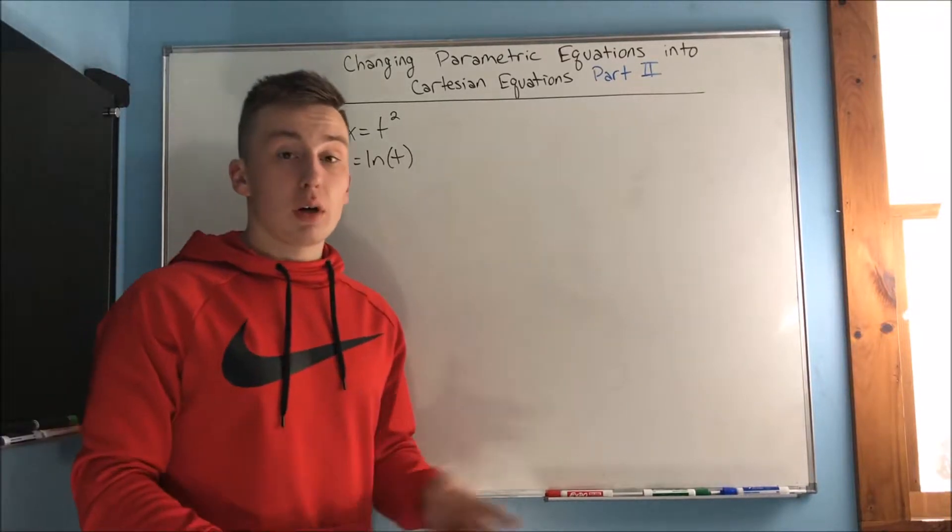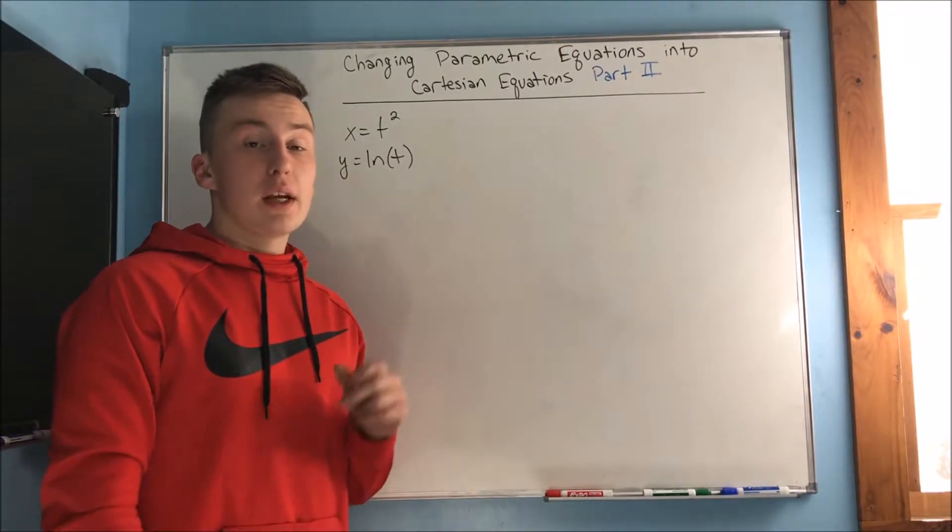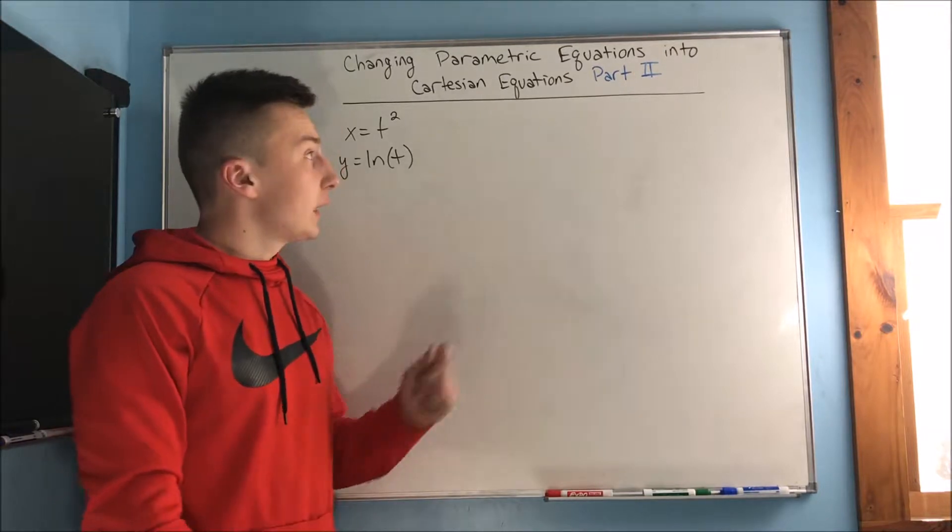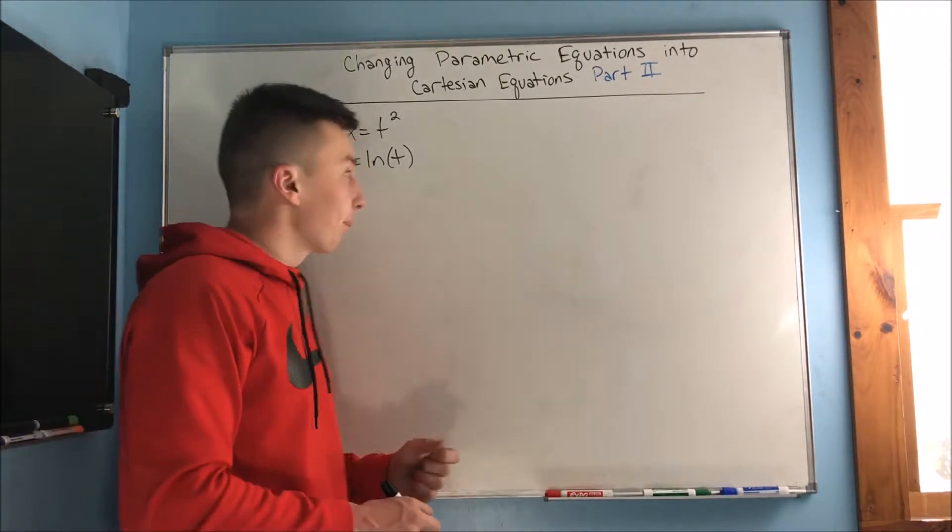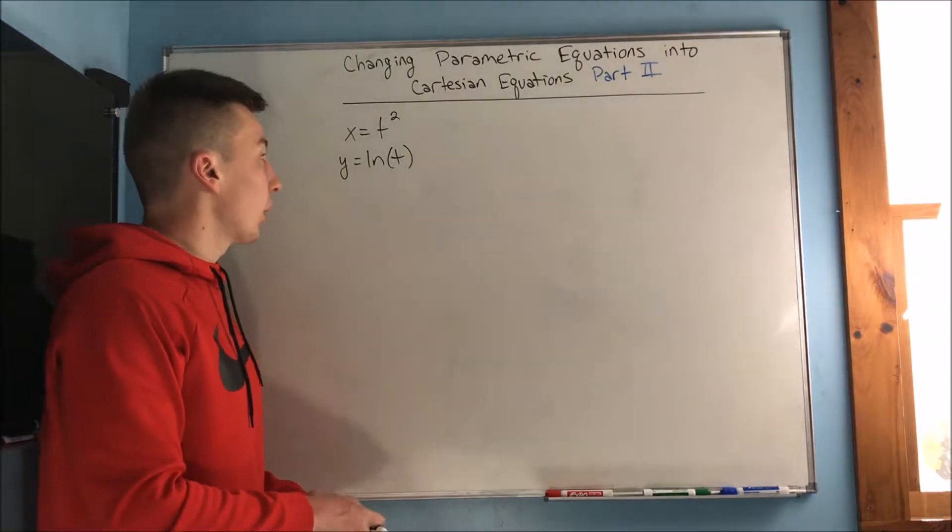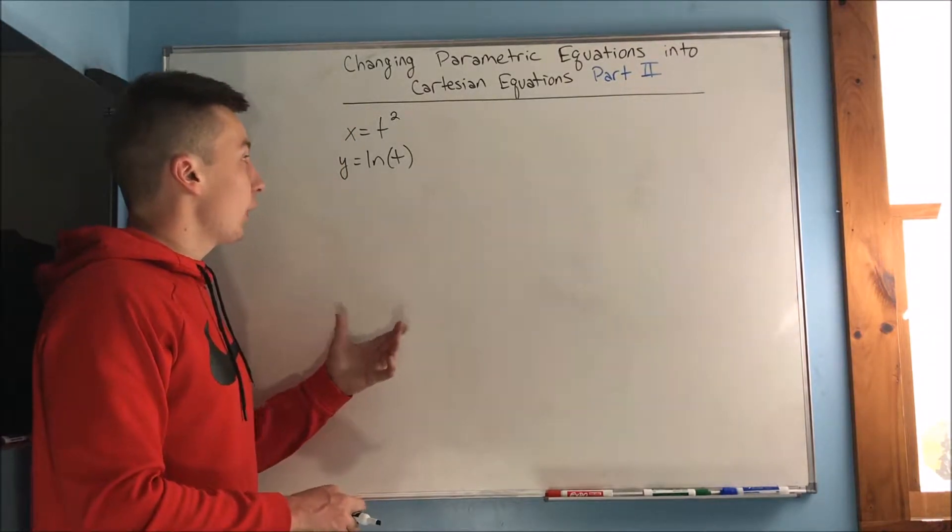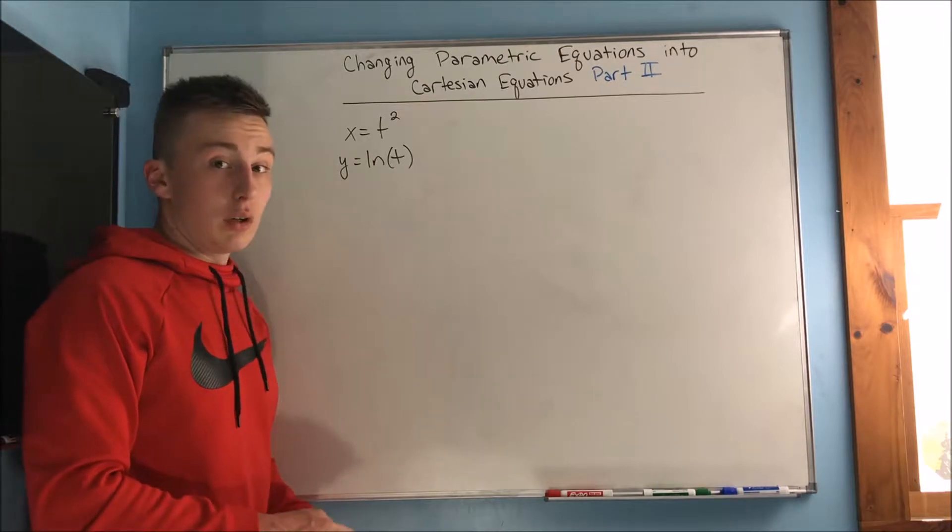In this video we're going to be doing some more of changing parametric equations into Cartesian equations. This is the part 2 video; if you missed part 1 definitely go check that out. We have our two parametric equations up here: x equals t squared and y equals the natural log of t.